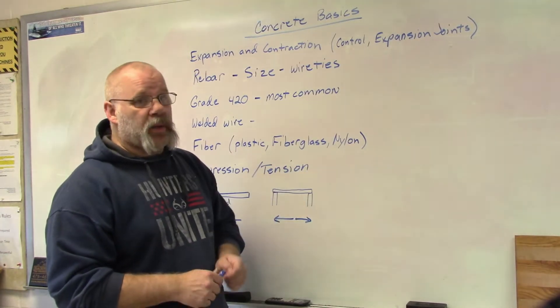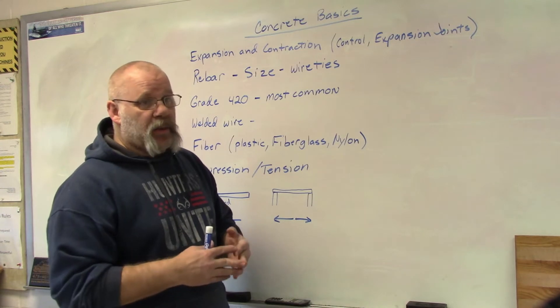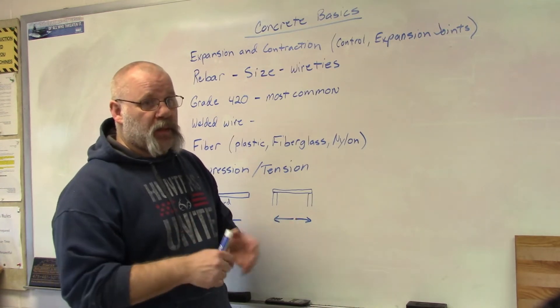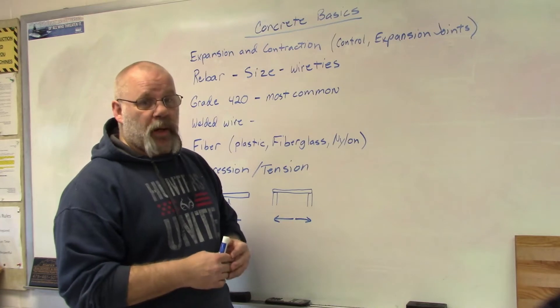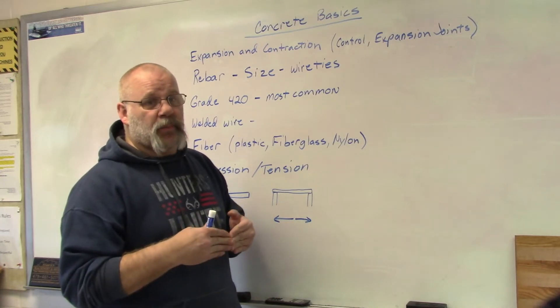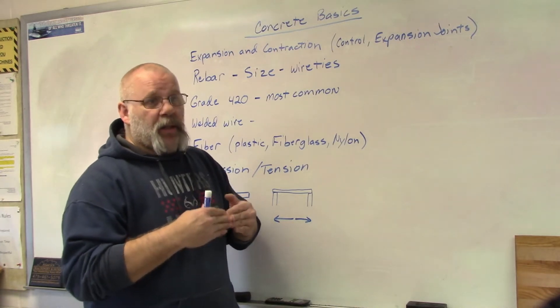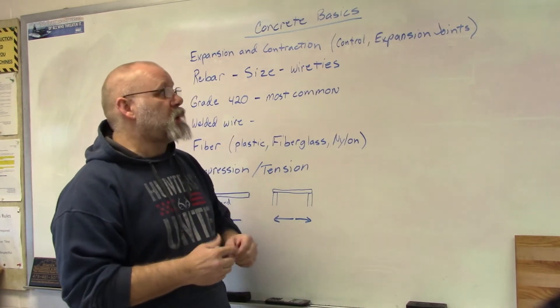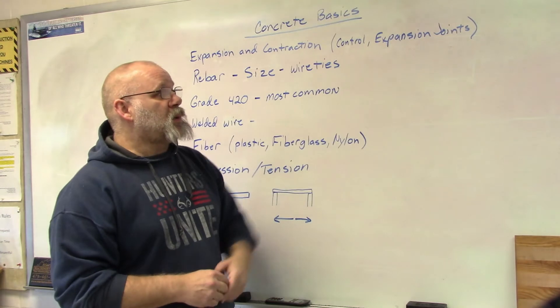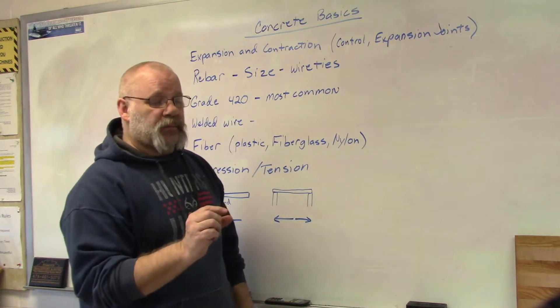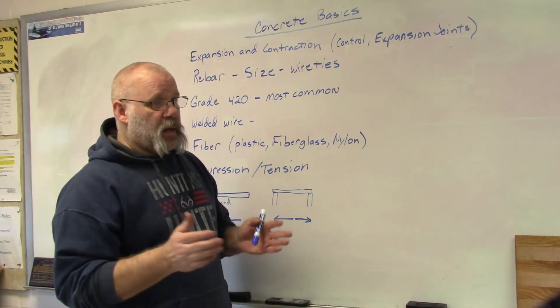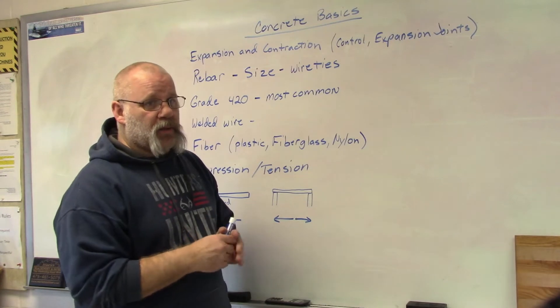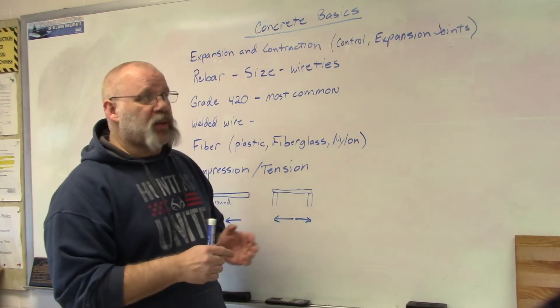I'm sure a lot of you have driven down the highway and saw where parts of the highway have been buckled. Well, that's from expansion where it got really hot and the concrete expanded and then it's like an earthquake. You know, where two plates are colliding, they make volcanoes. Well, that's pretty much what that expansion joint is there to do. They put a material in there so that it allows the concrete to expand and contract without one slab pushing against another slab.